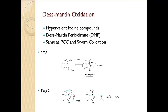Dess-Martin oxidation is another way to oxidize alcohols without the use of toxic chromium compounds. It uses hypervalent iodine compounds, most generally known as Dess-Martin periodinane, abbreviated as DMP.